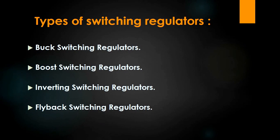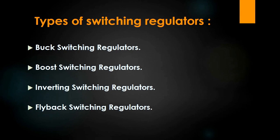Let's now look at the different types of switching regulators. First, buck regulators — they are used to down-convert the DC voltages. Second, boost regulators — they convert the input voltage to a higher value. The third one is inverting regulator, and as the name suggests, they are used to invert the input voltage to negative outputs. The fourth one is flyback — it is a buck or boost type switching regulator, but uses a transformer instead of inductor, providing better isolation between input and output, and thus is used for higher voltage applications.